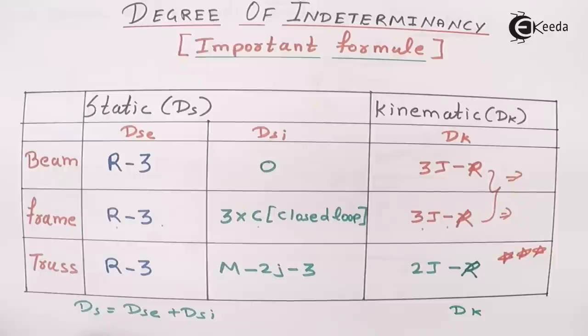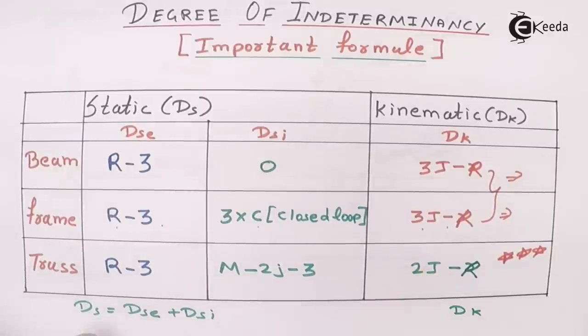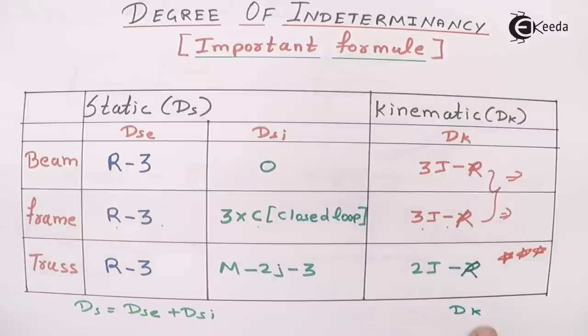We will solve DK directly in the problems. DS = DSE + DSI, and DK we solve directly. I will explain how to solve DK when we go through the problems.